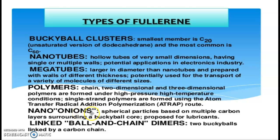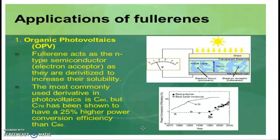Nano-onions are spherical particles based on multiple carbon layers surrounding a Buckyball core, almost similar to an onion structure. They can be used as a lubricant in machines. Linked ball-and-chain dimers are nothing but two Buckyballs linked by a carbon chain.